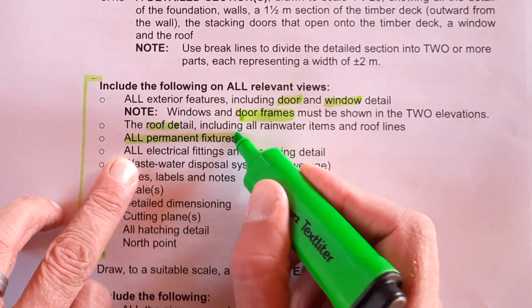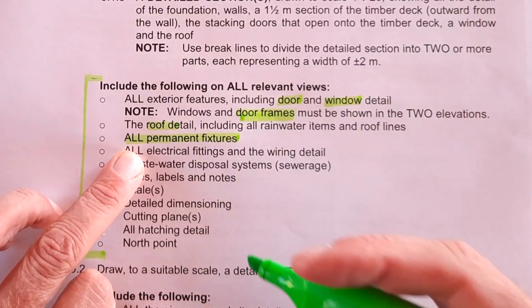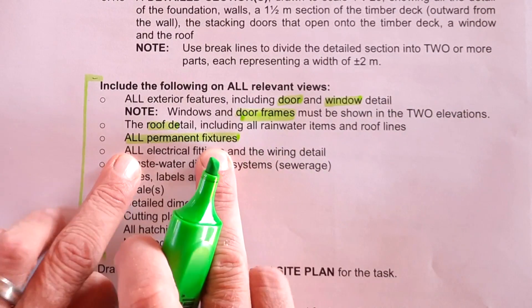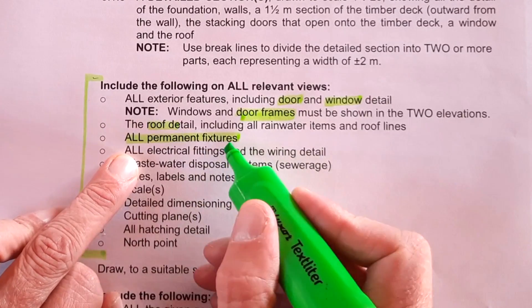You're going to do all the permanent fixtures. That's for instance, all the bathroom fixtures, your kitchen cupboards, built-in cupboards, etc. People, permanent fixtures is not your tables and your chairs. Please take note of that.